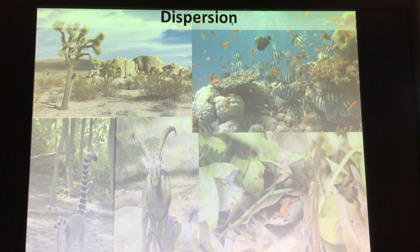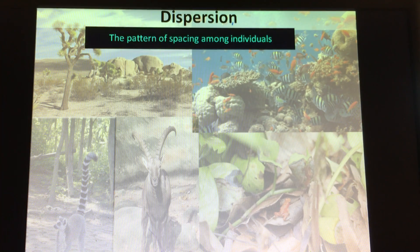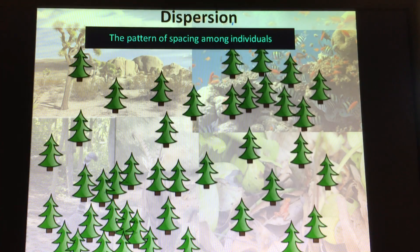When we look at how populations are dispersed across an area, we have three different patterns of dispersion. The first one we're going to look at is random.